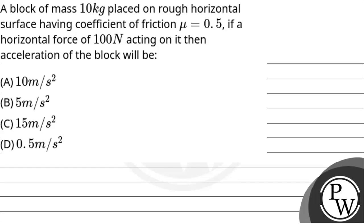Let's read the question. The question says that a block of mass 10 kg is placed on a rough horizontal surface having coefficient of friction equal to 0.5. If a horizontal force of 100 N is acting on it, then what will be the acceleration of the block?